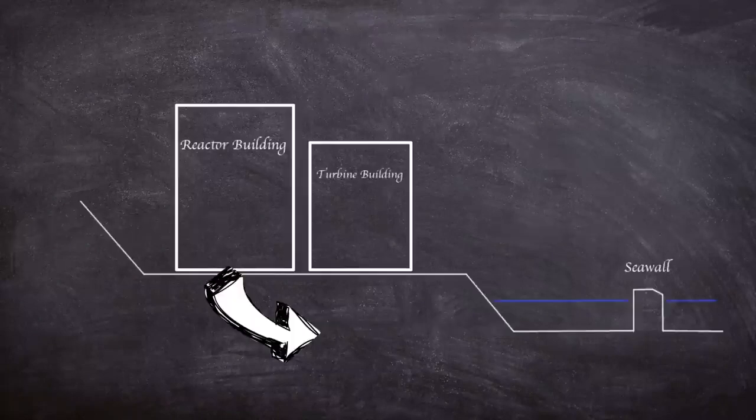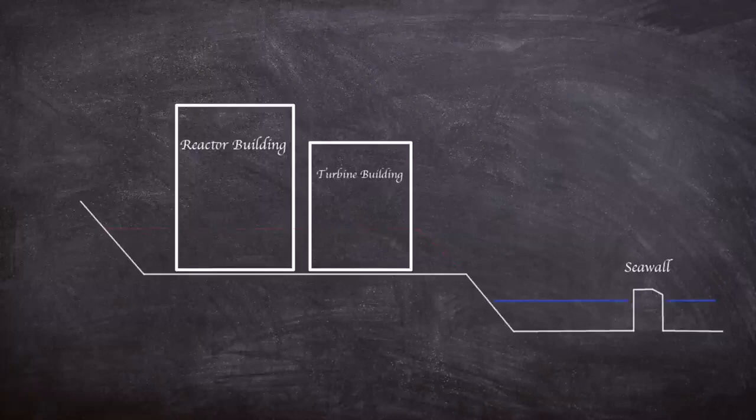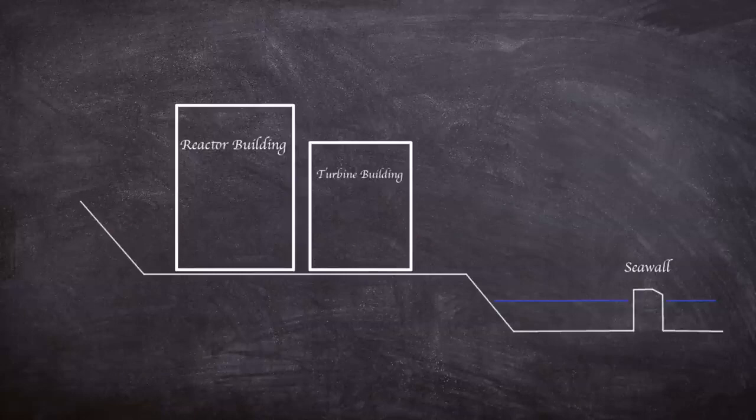The site was built on a bluff 25 meters above sea level. Originally it was intended to be at 35 meters, however the designers lowered the height to reduce the strain on sea water pumps, as well as making the foundations closer to stable bedrock, which helped keep the plant more earthquake resistant. This lowered height was thought to be tsunami safe in conjunction with an adequate sea wall.